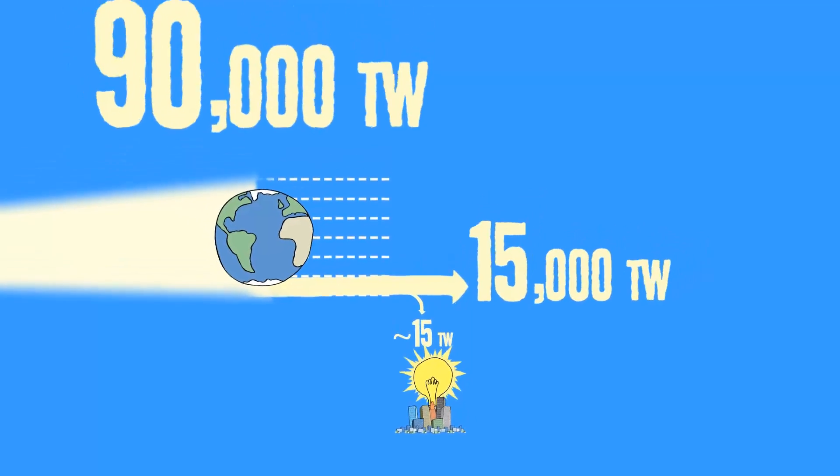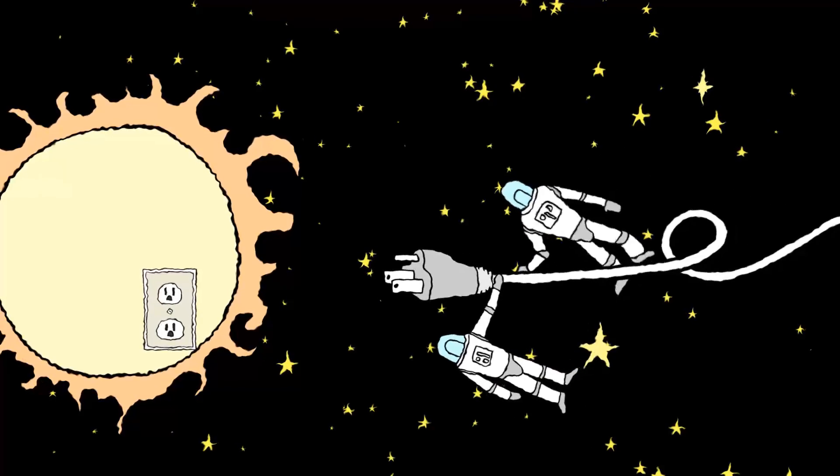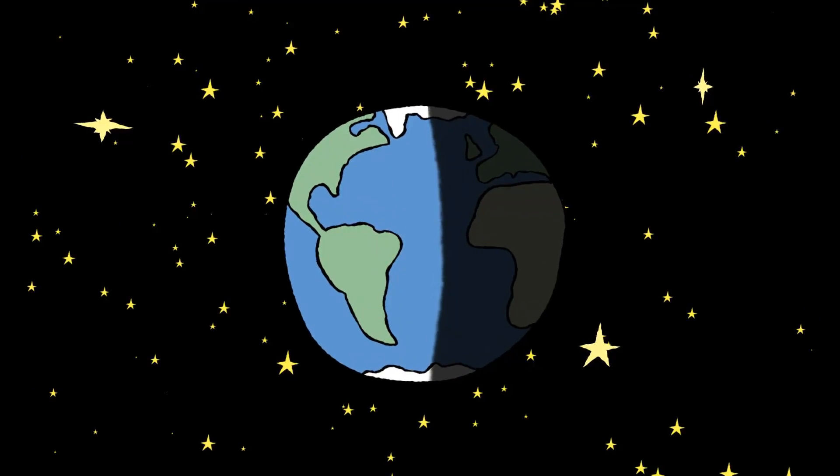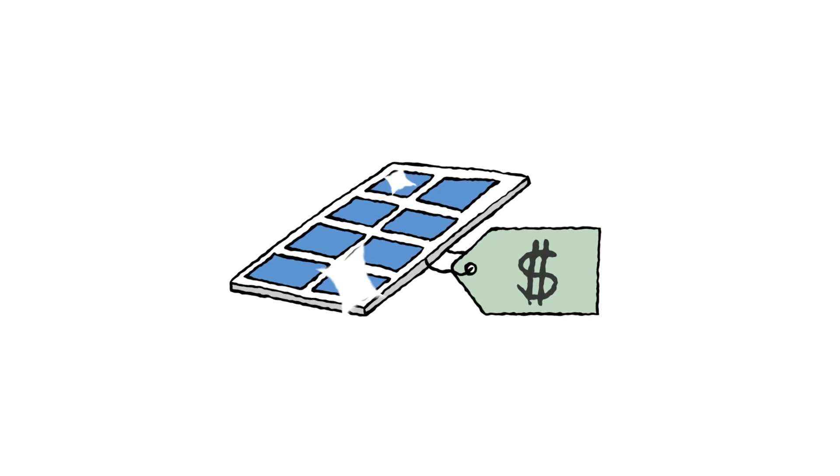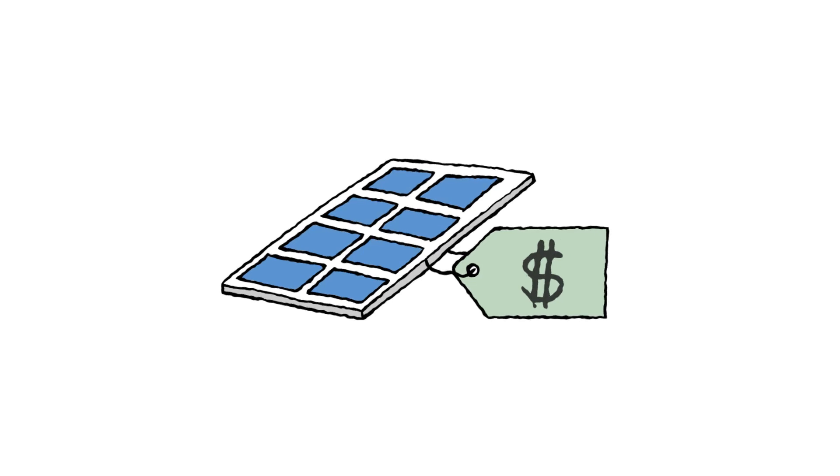So why don't we do that? Well, it's not like you can just plug into the sun. It only shines on half the planet at a time, and we're not great at storing electricity for the other half. Plus, even after you solve those problems, the technology is just expensive.